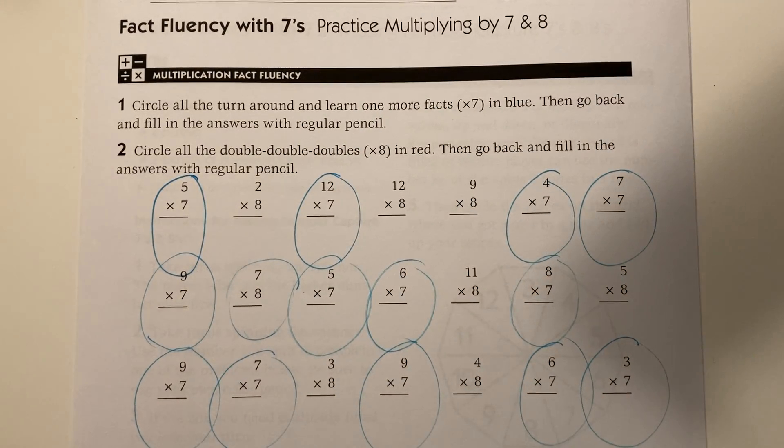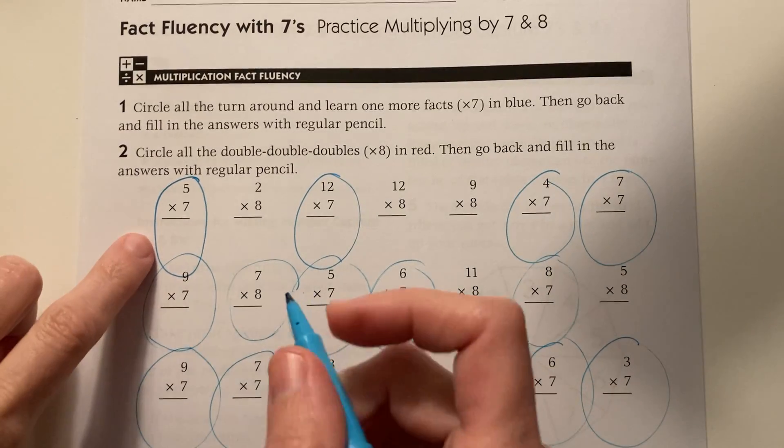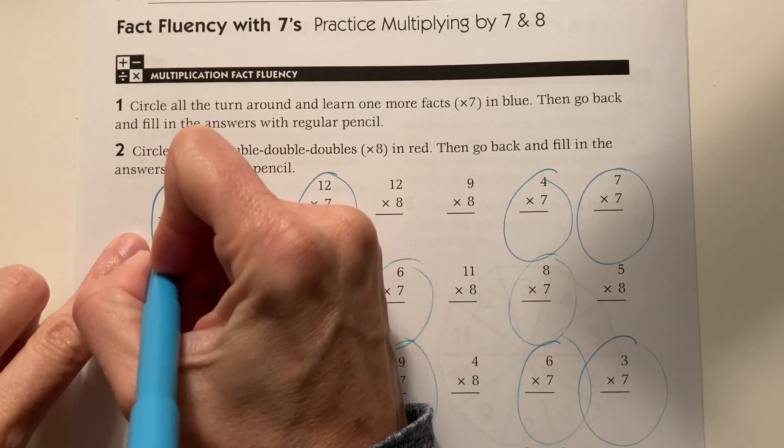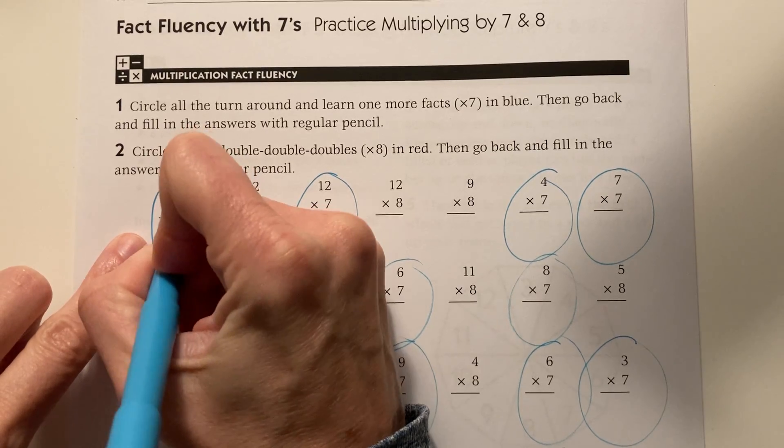Now I'm going to go back and solve them. Five times seven is the same as seven times five. I know my fives like clock facts. Five, ten, fifteen, twenty, twenty-five, thirty, thirty-five.